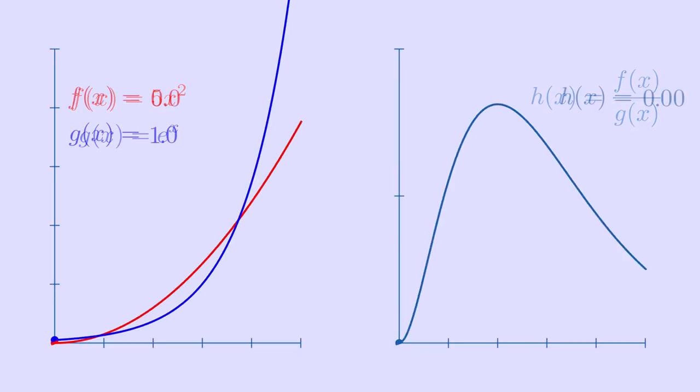First, the exponential has a head start at x equals zero, because it's already at one, while the polynomial starts back at zero. At this point, the ratio is zero.